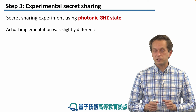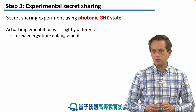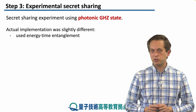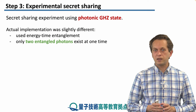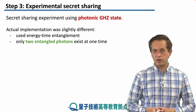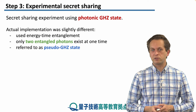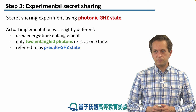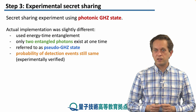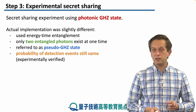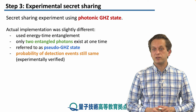The actual experiment was slightly different because it used energy-time entanglement, where time is essentially an encoded qubit. This meant only two entangled photons existed at any one time, so it wasn't quite a GHZ state — the authors called it a pseudo-GHZ state. However, this is not a problem, because the probability of detection events was still the same as presented, and this was experimentally verified.